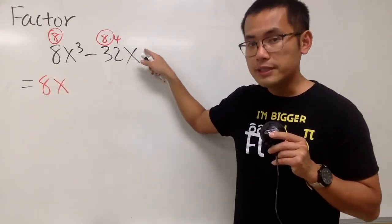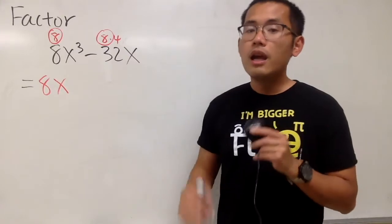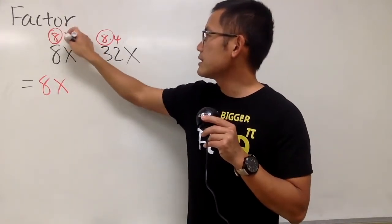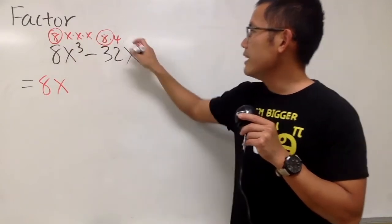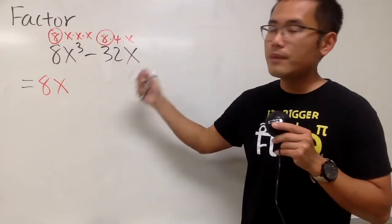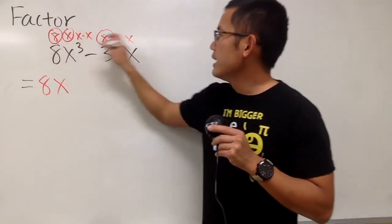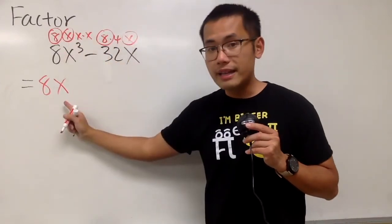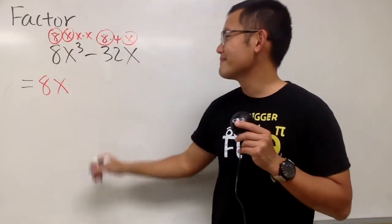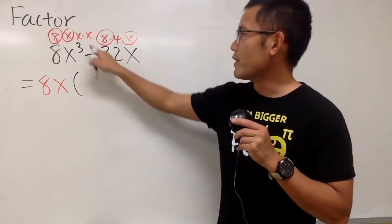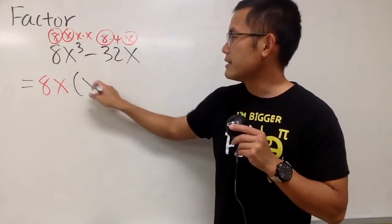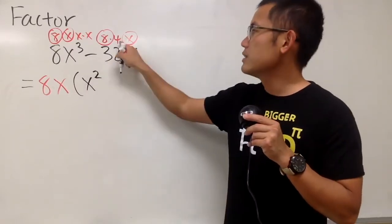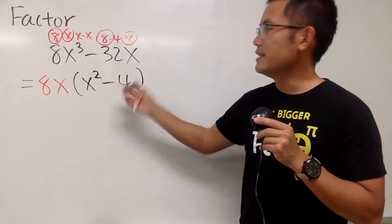Go ahead and take that out. x to the third power is x times x times x, and the x is just 1 by itself. This x and that x are in common, so we can take that to the front. The leftover is x times x, which we write as x squared, and then minus 4.